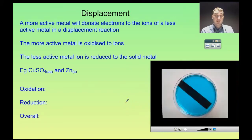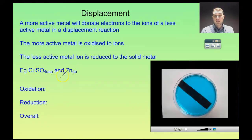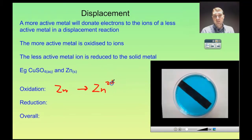Let's have a look at what's happening here. Zinc is a more active metal than copper, so with copper ions in the solution, the zinc is being oxidized. Zinc is oxidized to zinc ions — zinc makes a 2+ ion — and we're getting two electrons lost, so oxidation is loss.